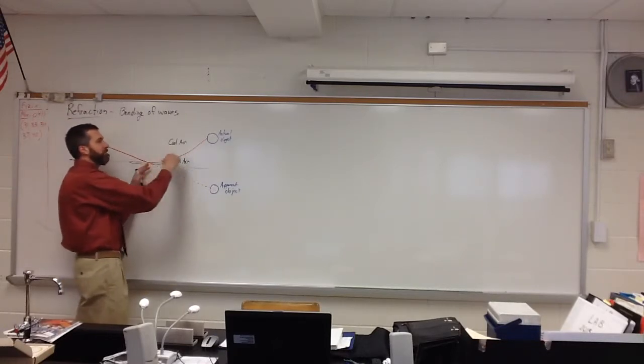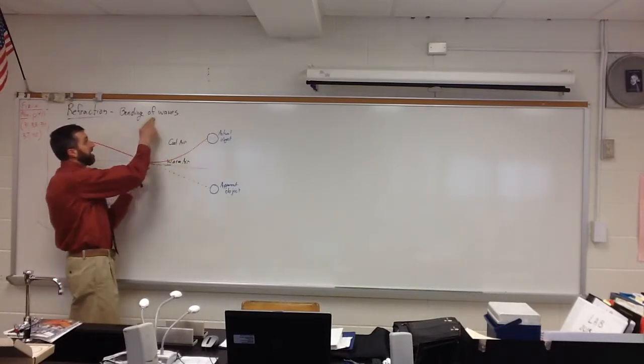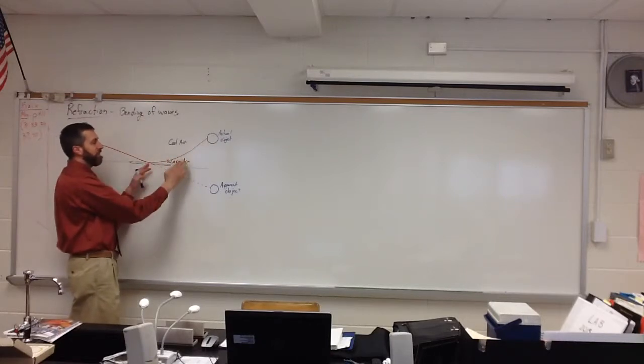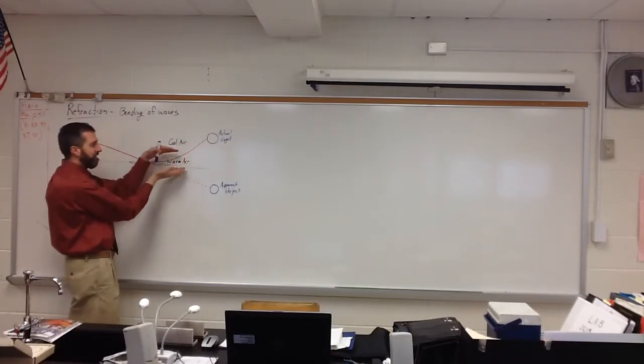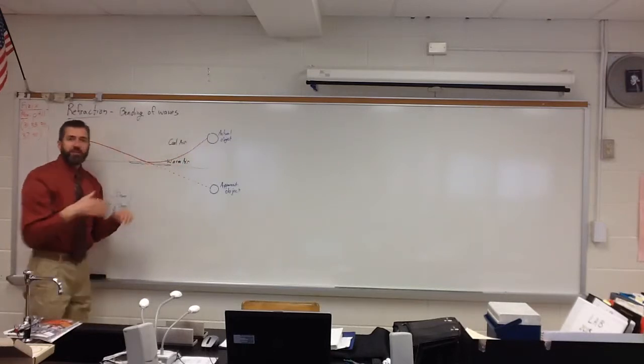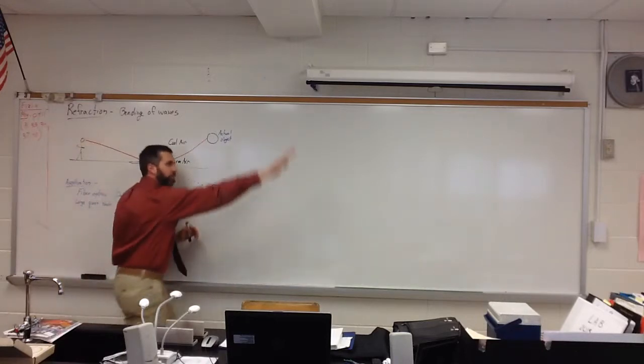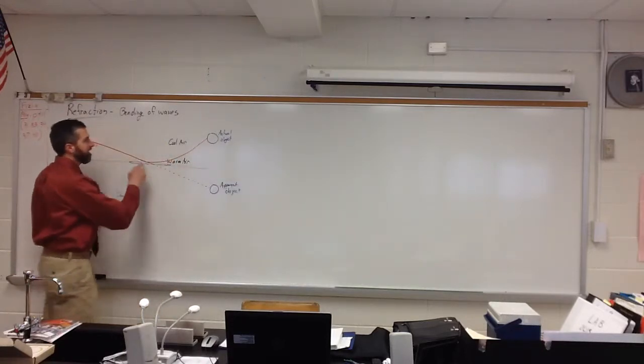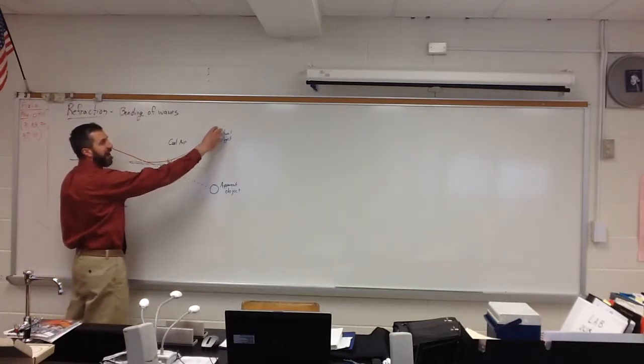But in reality, the light is being bent. Bending the waves. The light is being bent because of the difference in density between the cool and the warm air. So you're going to have some really warm air near the ground, some cool air up above. It has different densities. And as the light goes through it, it bends in.